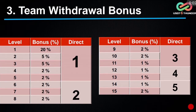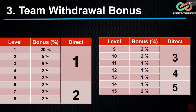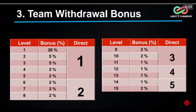In team withdrawal bonus, certain conditions apply. If you want to get team withdrawal bonus from your first to 5th level team, you have to have at least 1 direct. From 6th to 8th level, at least 2 directs. From 9th to 11th level, at least 3 directs. From 12th to 13th level, 4 directs. From 14th to 15th level, at least 5 directs. So if you want team withdrawal bonus from your first to 15th level, 5 directs is mandatory.